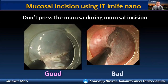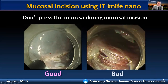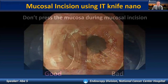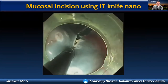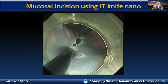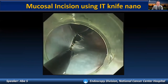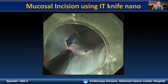When it comes to mucosal incision using the IT knife nano, it is very important not to press the mucosa too much. If you press too much, you may experience inadvertent muscle injury during mucosal incision. We can safely and efficiently perform longitudinal mucosal incision just by pulling back the device, not pressing too much.